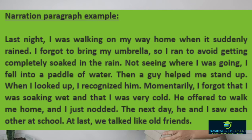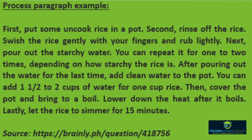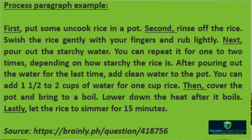Here is one example of a narration, and one example of a process — how to cook rice. Take a look at this paragraph. You can see signal words such as first, next, after, and last time. The underlined words are examples of signals found in the paragraph. We also have second and next. You can find all of them throughout.